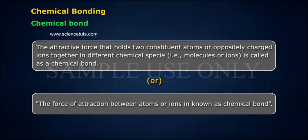Chemical bond is the attractive force that holds two constituent atoms or oppositely charged ions together in different chemical species. That is, molecules or ions. Or, the force of attraction between atoms or ions is known as a chemical bond.